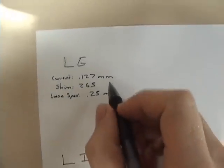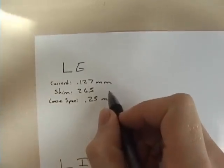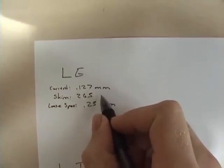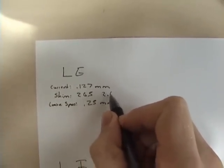The way shims are numbered is in hundredths of a millimeter, so a .265 shim is 2.65mm.